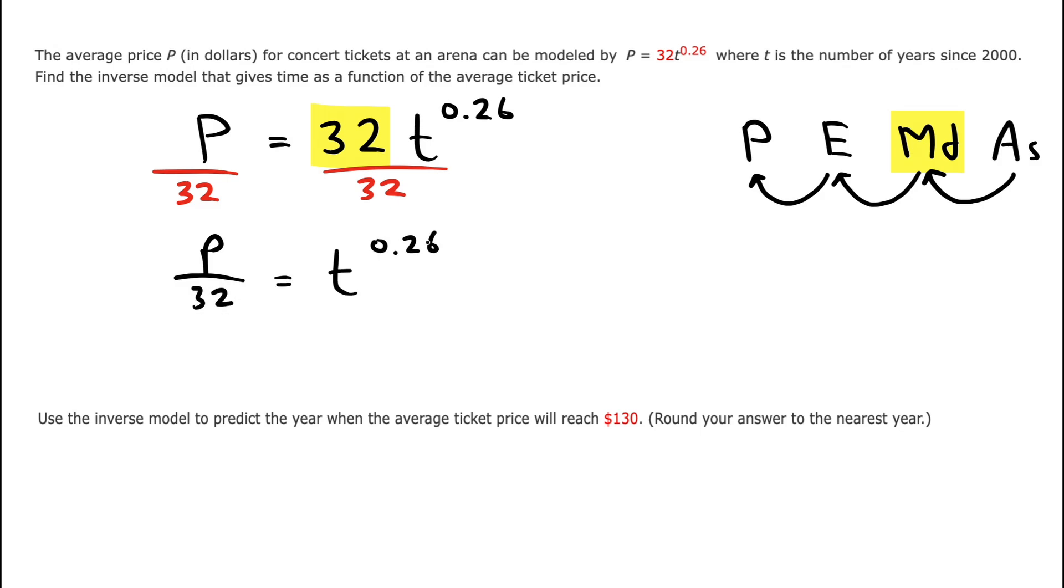And we can now go on to the next step, which would be undoing the exponent. When you undo an exponent here, you want to raise the power to another power. And we just have to figure out what power would cancel the 0.26 power.